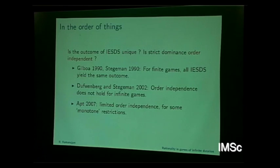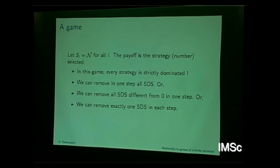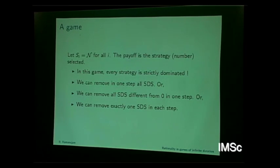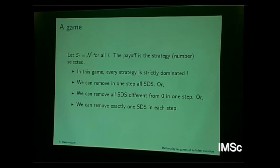Order independence is something you do have for at least finite games, but for infinite games we don't have it for strictly dominated strategies. Here is a game where the strategy space is the set of natural numbers for every player — you select a number, whatever you pick is it, one shot. In this game, every strategy is strictly dominated. We can remove in one step all strictly dominated strategies, being left with nothing. Or we can remove all strictly dominated strategies different from zero in one step, being left with a nice Nash equilibrium. Or we can remove exactly one strictly dominated strategy in each step, in which case it will never terminate.